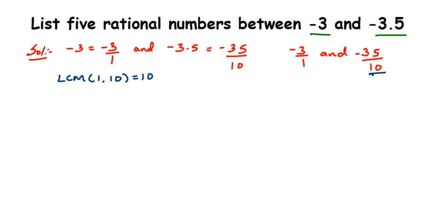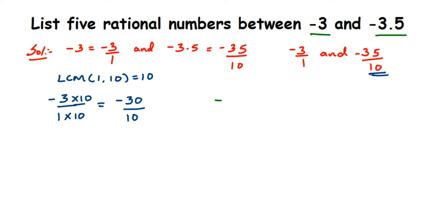We change the denominator of minus 3 by 1 to 10 by multiplying numerator and denominator by 10 — this is like finding the equivalent rational number. Minus 3 by 1 becomes minus 30 by 10. Both are equivalent. For minus 35 by 10, the denominator is already 10, so it remains the same.